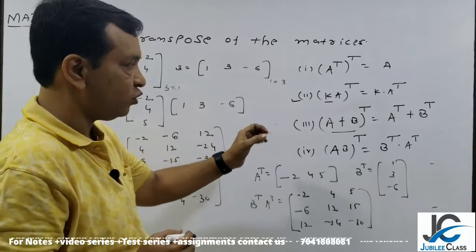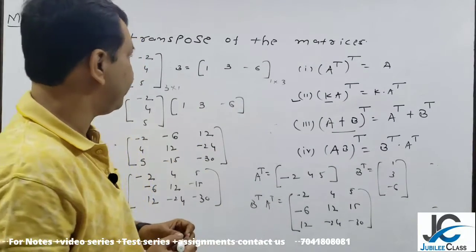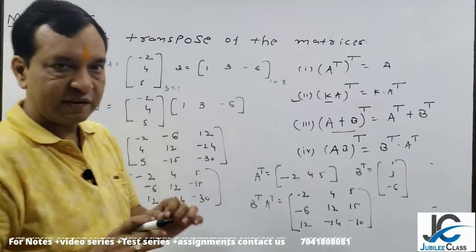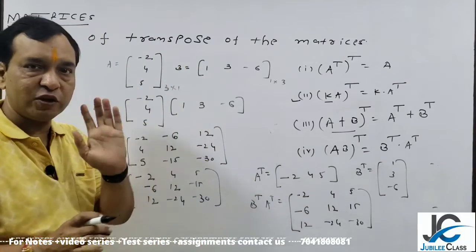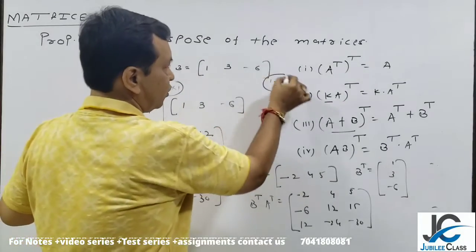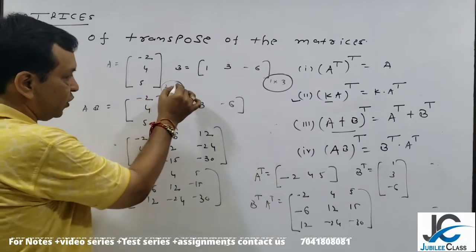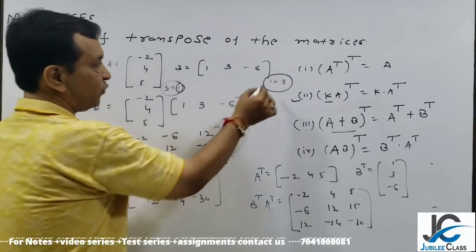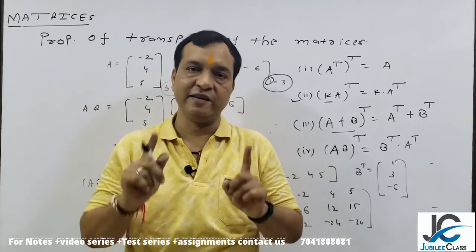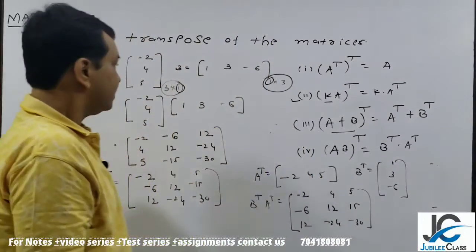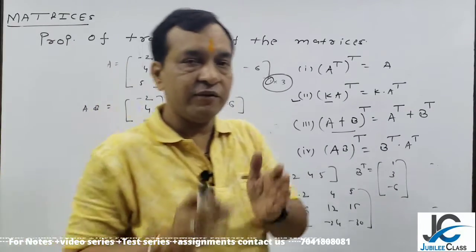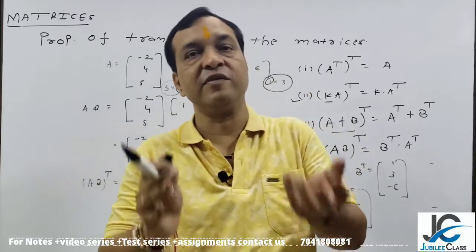A into B transpose is equal to B^T dot A^T. I am taking A equal to [1; -2; 4] and B equal to [1, 3, -6]. But in calculation, first check if multiplication is possible or not. So it is 3 cross 1 and 1 cross 3. First matrix number of columns and second matrix number of rows are same. Then the multiplication is possible. Yes, it is possible.